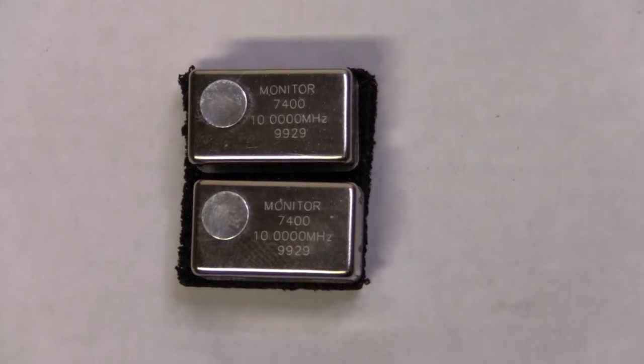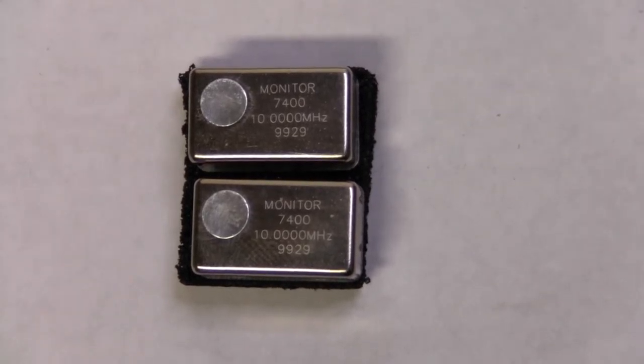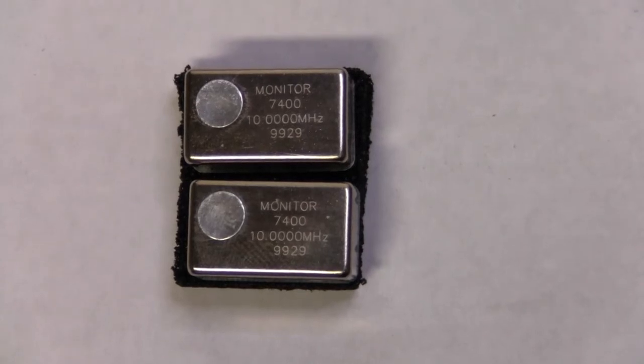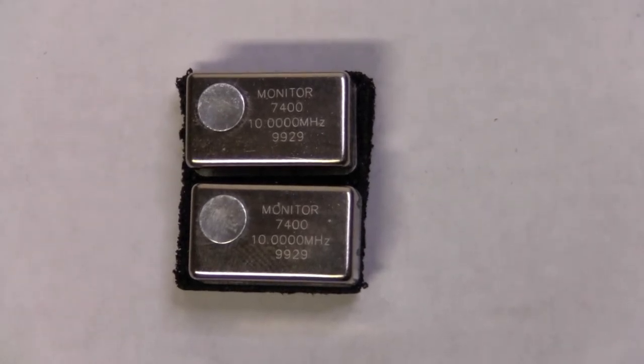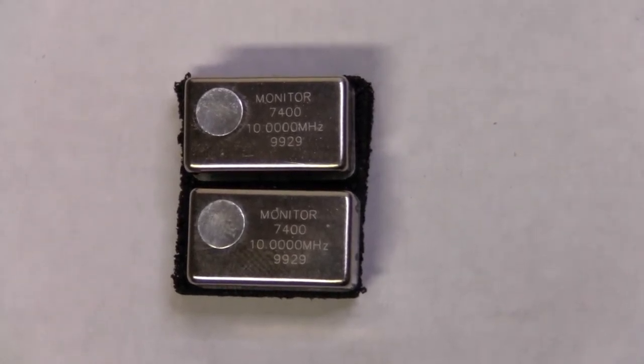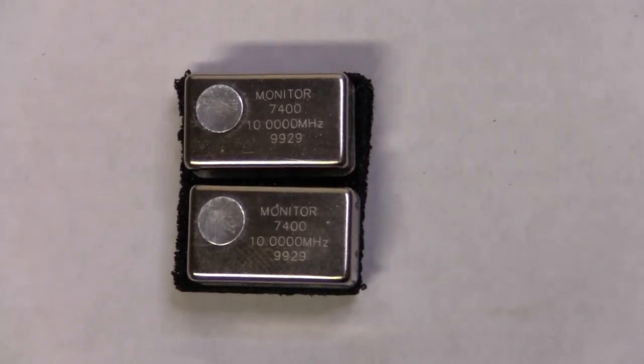on eBay. These are 10 megahertz TCXO, which means temperature compensated oscillators, and these are supposed to be quite precision ones.